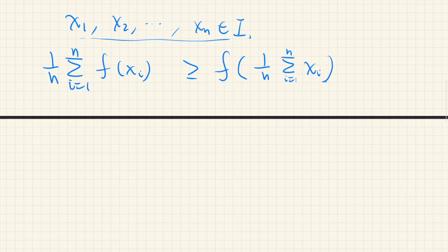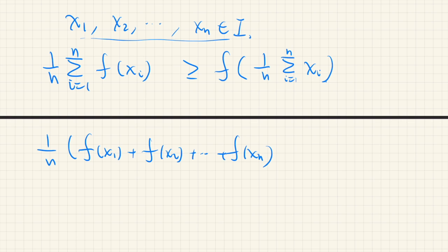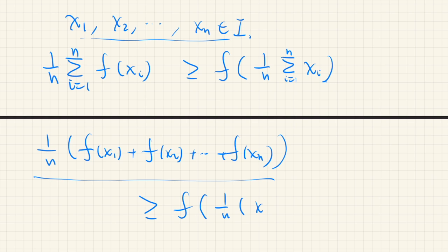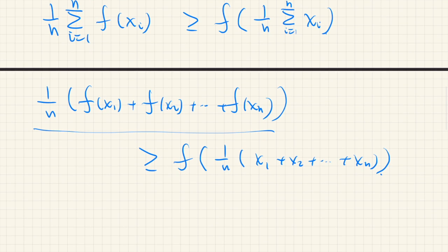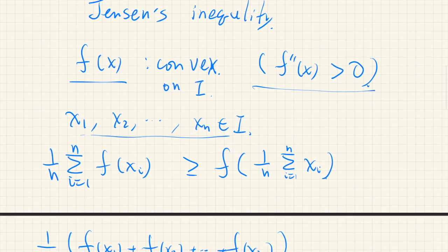Expanding this explicitly: [f(x1) + f(x2) + ... + f(xn)] / n is greater than or equal to f((x1 + x2 + ... + xn) / n). We will first prove Jensen's inequality — Jensen was a Danish mathematician — and then apply it with f(x) = eˣ to conclude the proof.